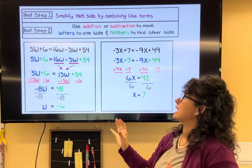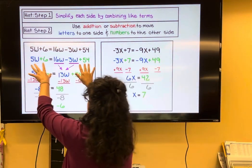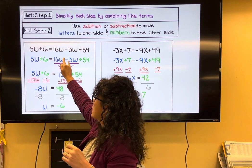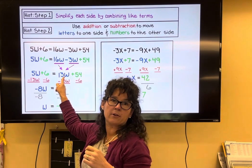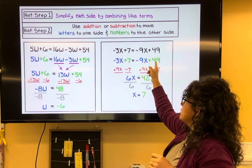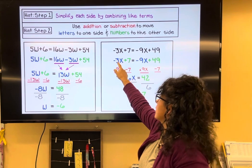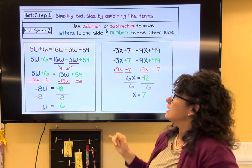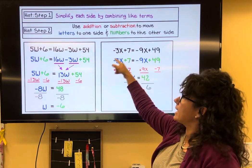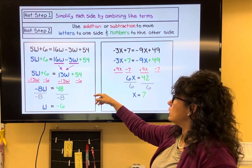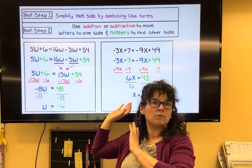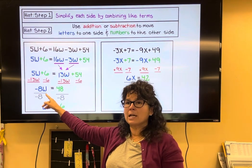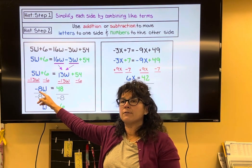To recap: step one, look at each side and combine any like terms — the w's on the same side could be combined, but blues and greens can't be combined together. Once each side is simplified, use addition and subtraction to move letters to one side and numbers to the other. You'll be left with a number next to the letter, and to get rid of that number you divide by it.